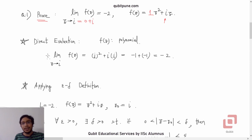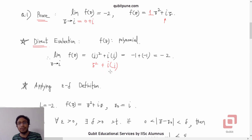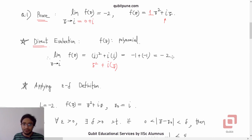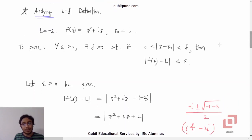Before we proceed, let us quickly check whether the limit is indeed −2 by direct substitution, which is what we usually do in any limit problem. Because f(z) is a polynomial, we directly substitute i in place of z: z² becomes i² and iz becomes i × i. Now i² = −1 and i × i = −1, so we get −2. As far as the direct evaluation is concerned, we have our answer, but we would now like to prove it using the definition.